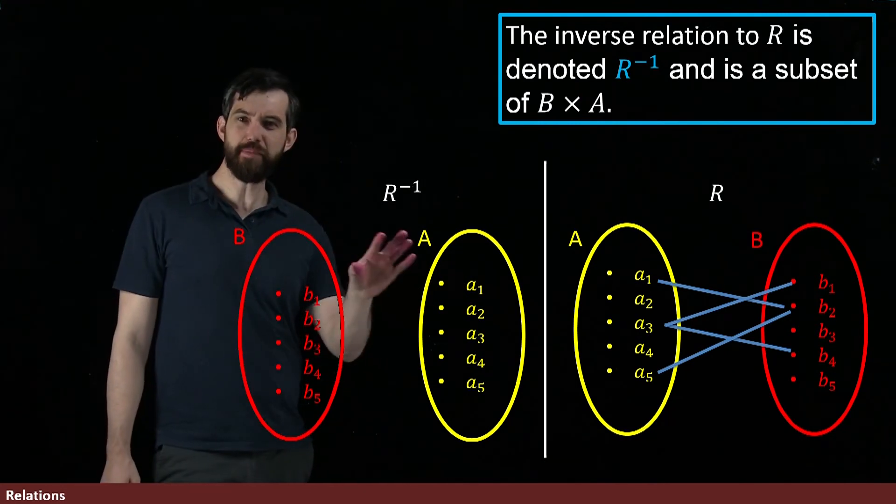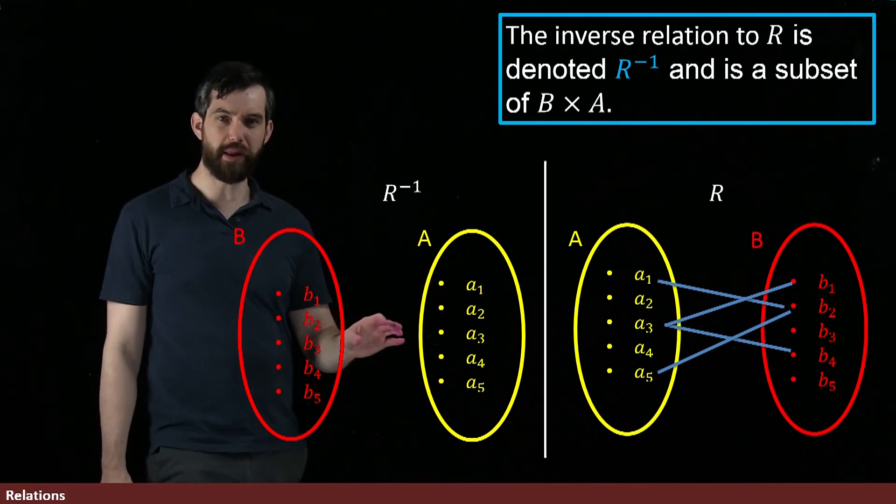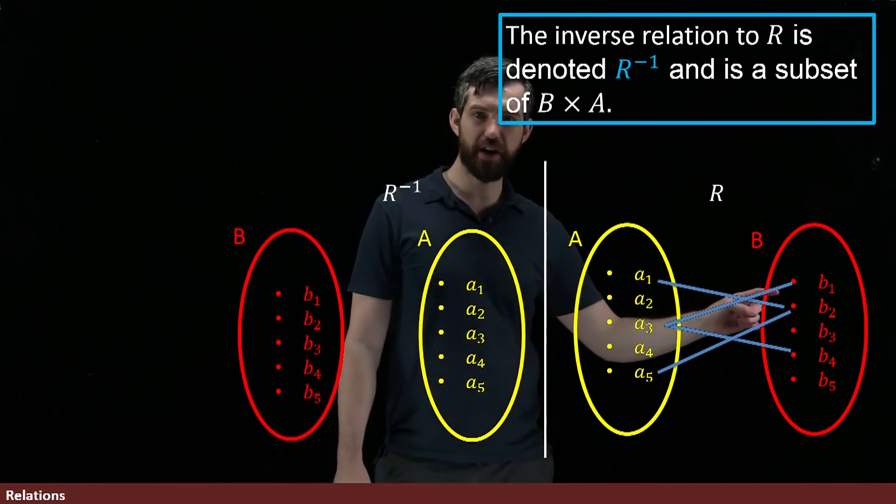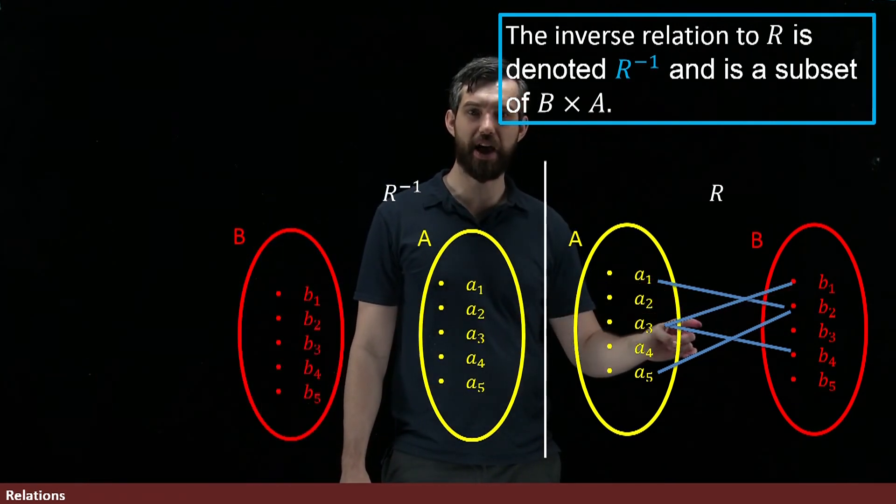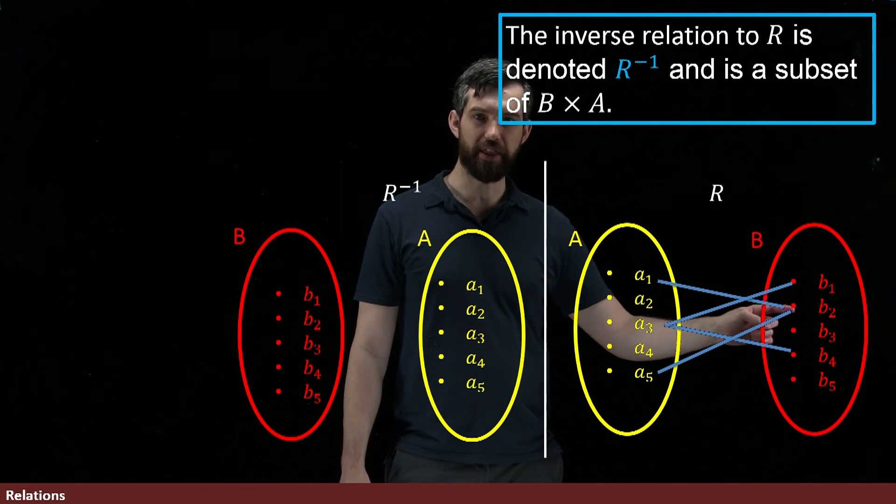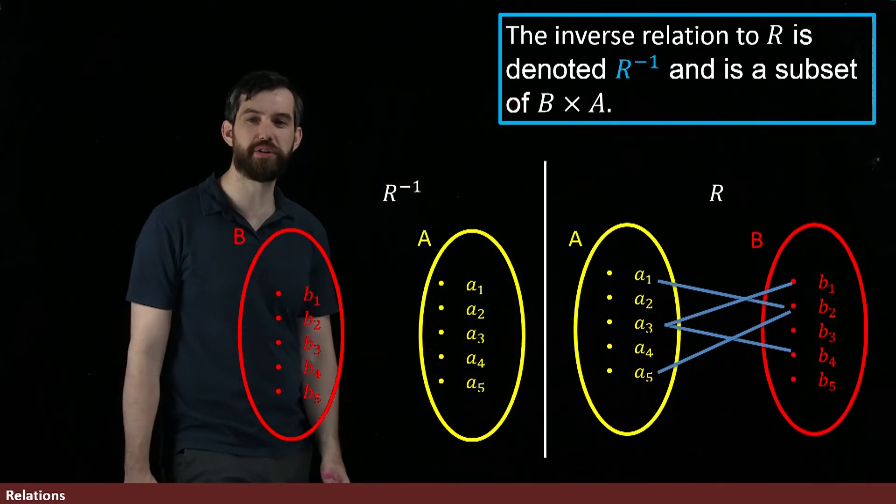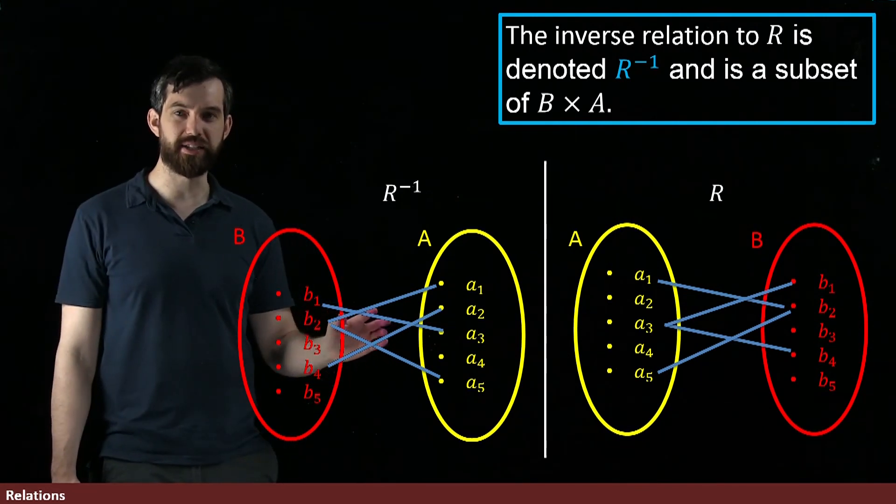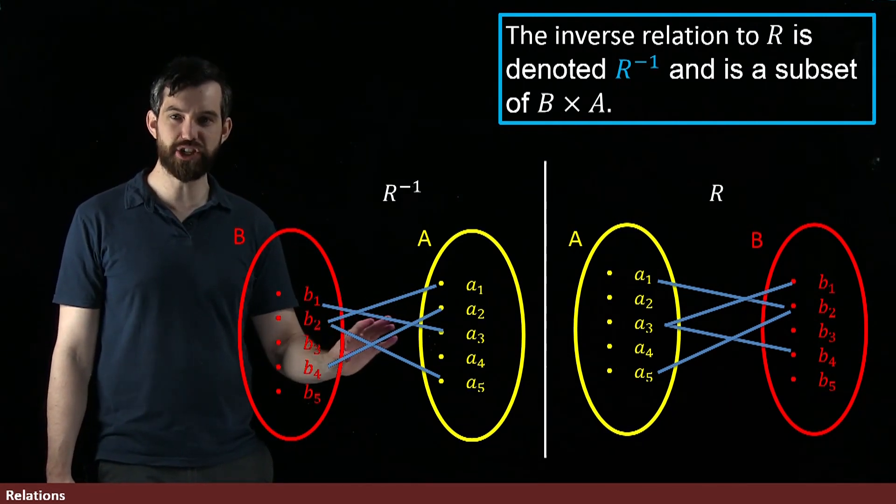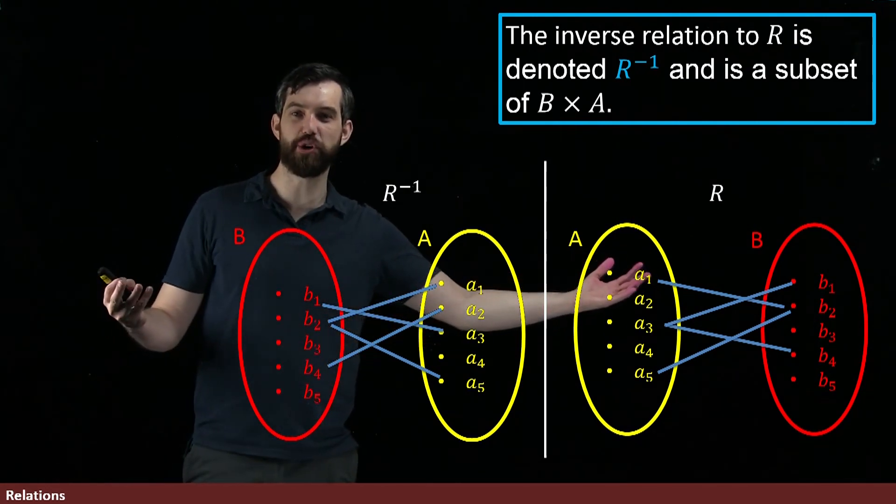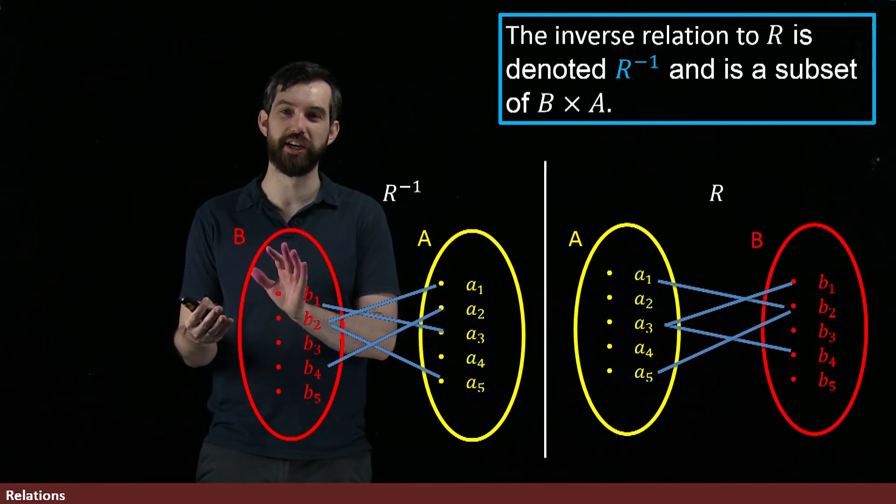And then if I think about how I should be connecting these, well, for instance, if I go over here, the B1 is connected down to the A3, the B2 is connected up to the A1 and the A5, and so on, so I can fill in my lines like this, where these connections are exactly this picture, but it's the mirror image of that picture.